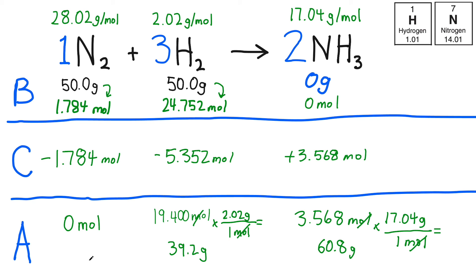So the great thing about this method is you always know you've done it correctly if mass is conserved. Remember, we started with 100 grams of reactant. And look what we have left. 0 grams of N2 left, it was the limiting reactant, 39.2 grams of H2, and 60.8 grams of the product, NH3. 39.2 plus 60.8 is also 100 grams.